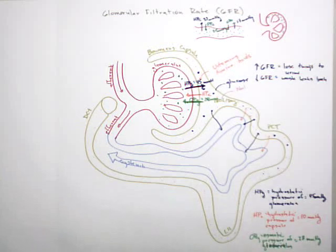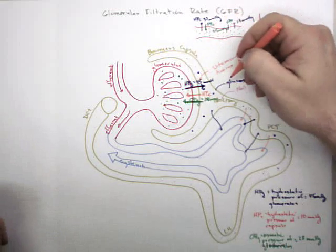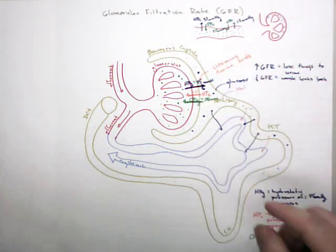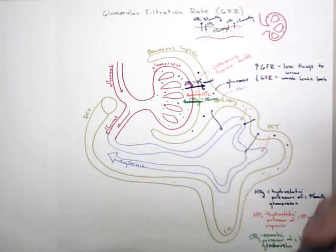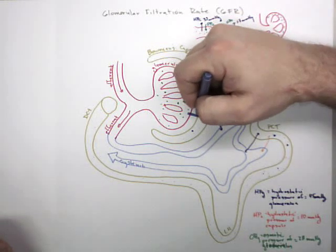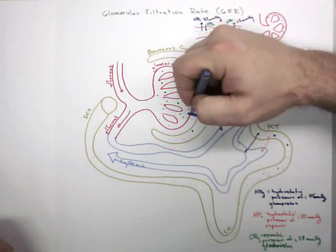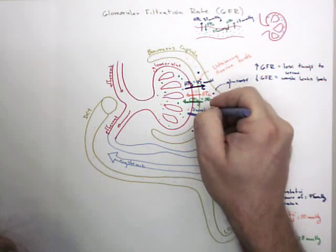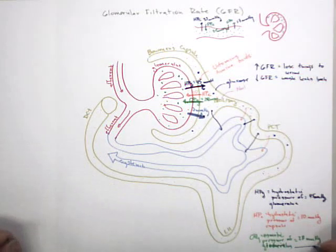Again, this is pushing in the opposite direction. So you've got 45 pushing this way, 10 pushing back this way, and another 28 pushing back this way. What that results in is a net 7 millimeters of mercury pushing in this direction.